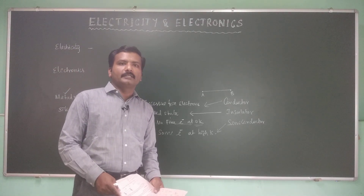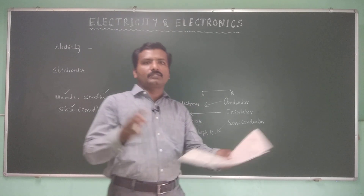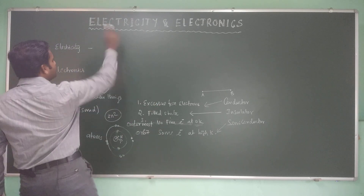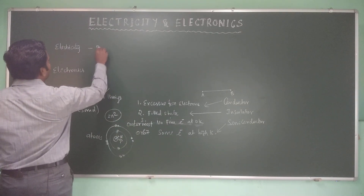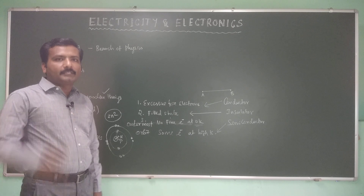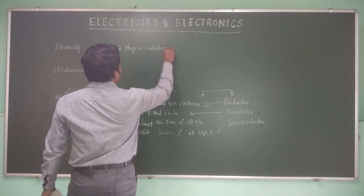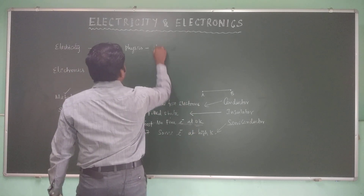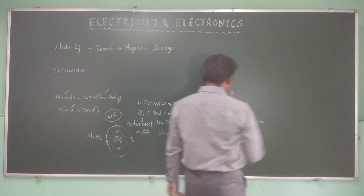These classifications are made based on the movement of electrons — whether electrons are available to move or not. Electricity can be defined as a branch of physics that deals with electrons, or more generally, that deals with charge. In an atom, electrons are assumed to be negative and protons are positive.